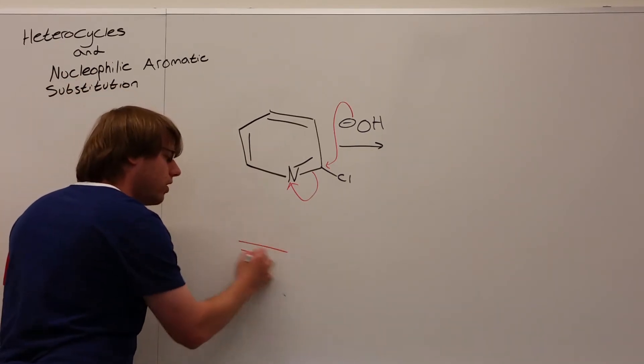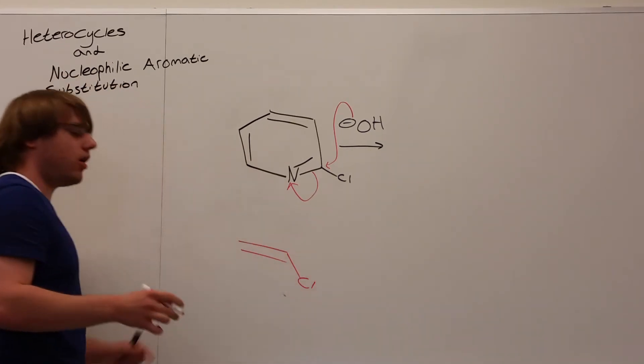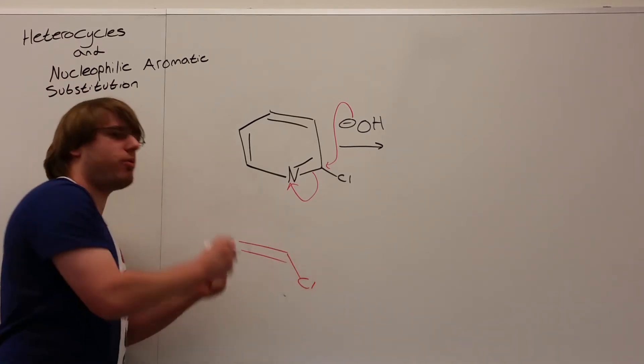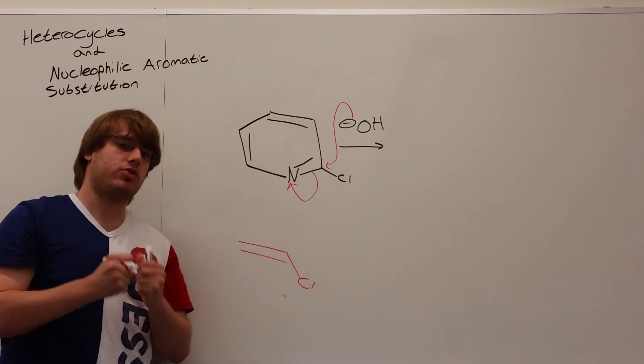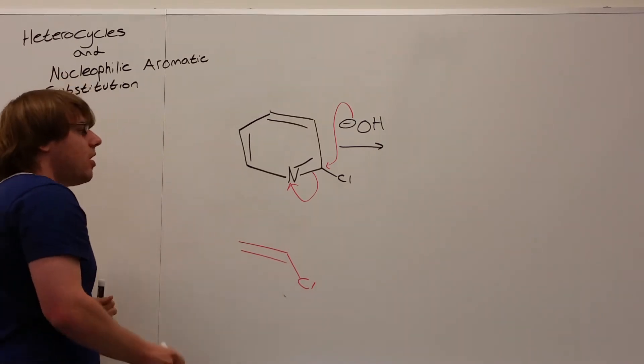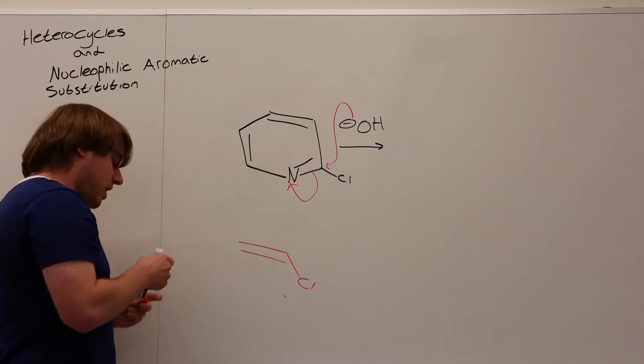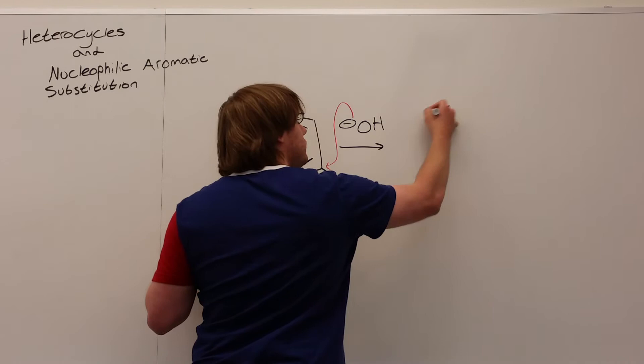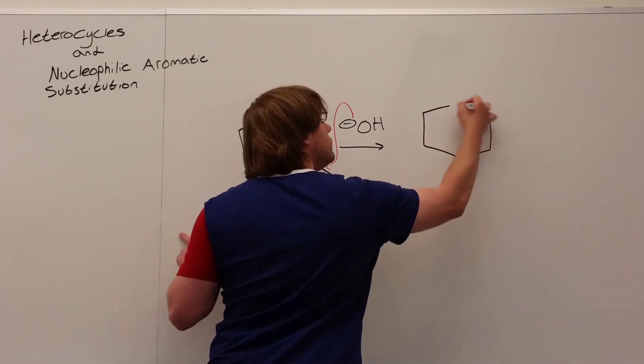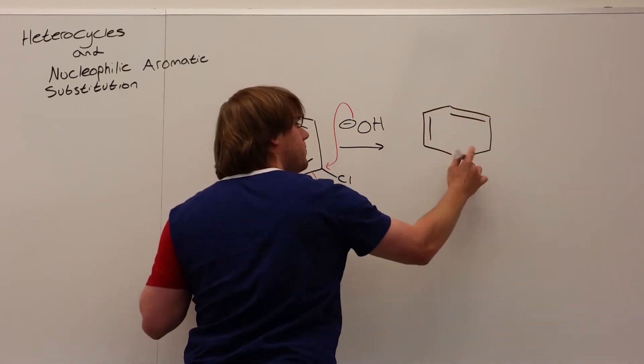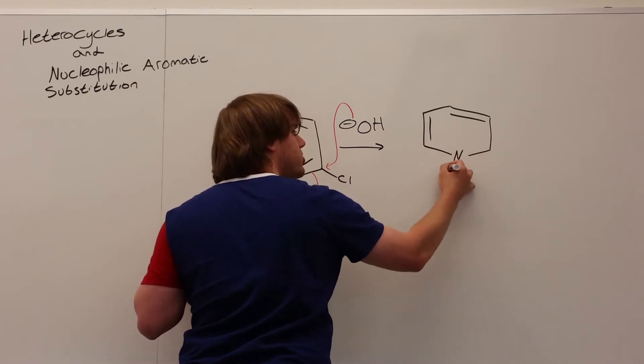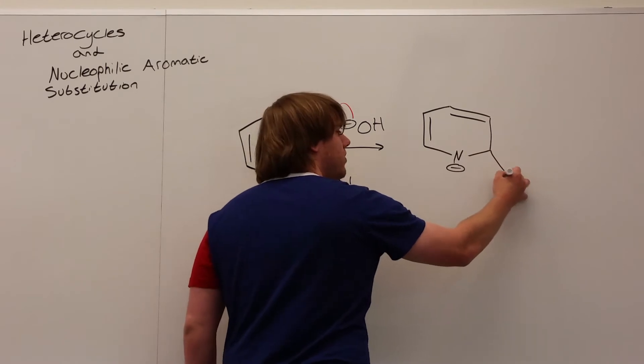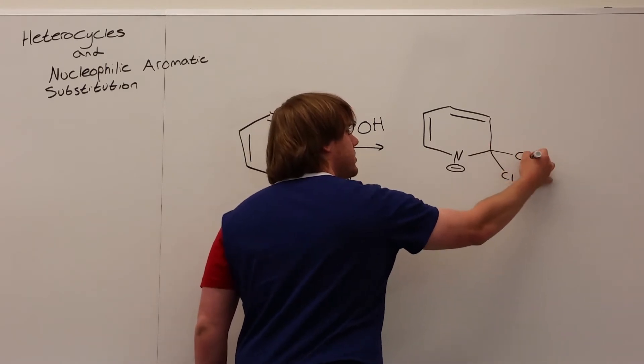The chlorine can't just get kicked out right away. We learned in Orgo 1 that leaving groups on double bonds are very, very bad at leaving. The bond that connects this chlorine to this double bond is super, super strong, so you can't just break it that easily. But this resonance will allow for things to happen the way we want.